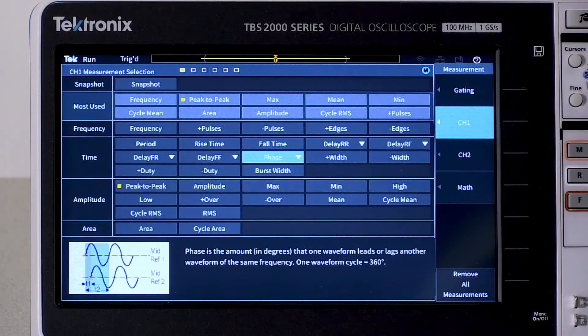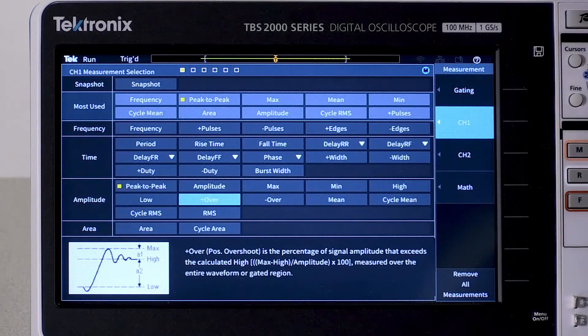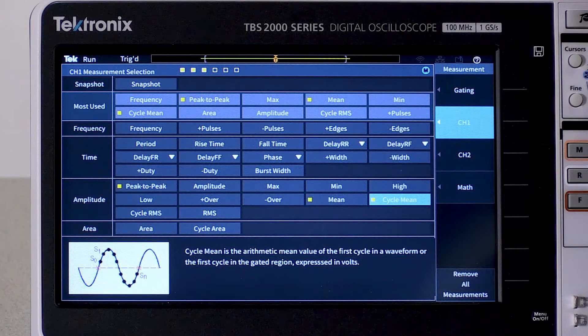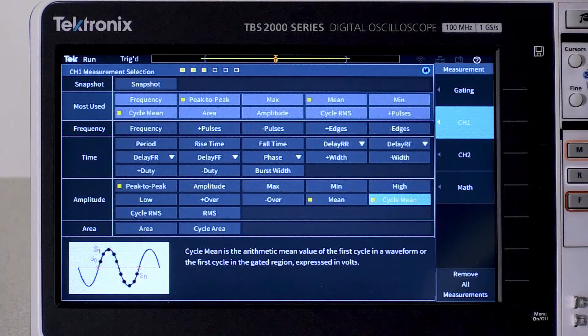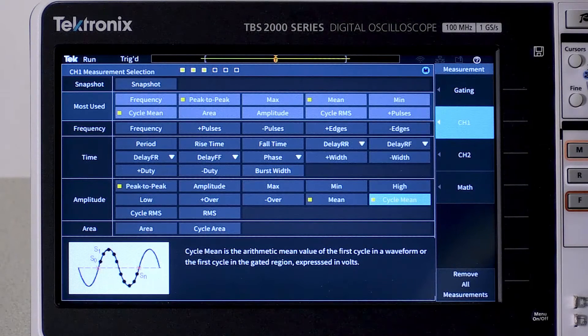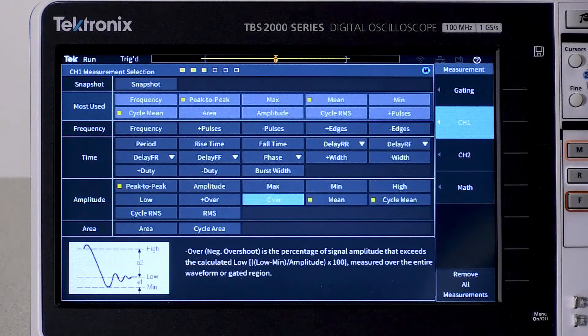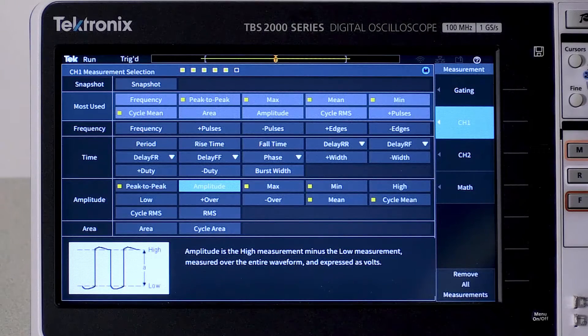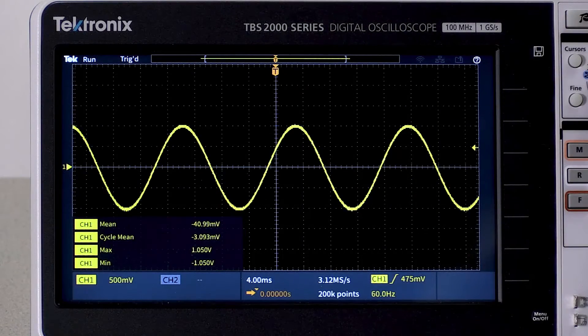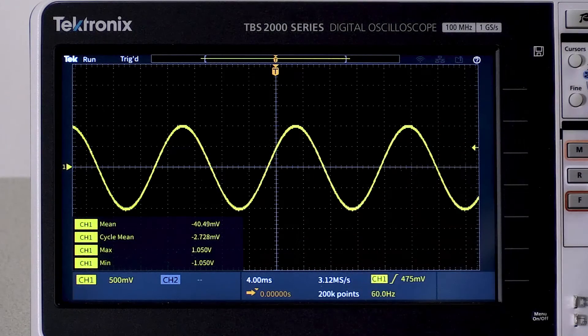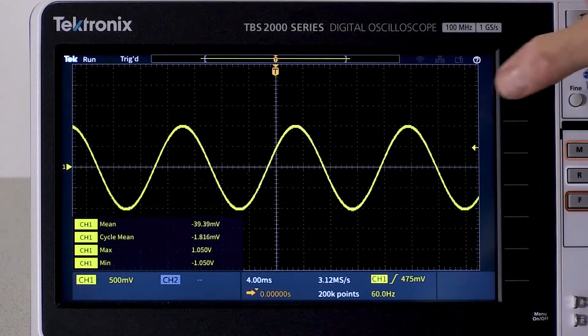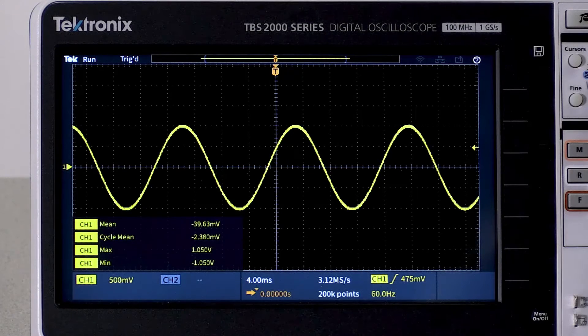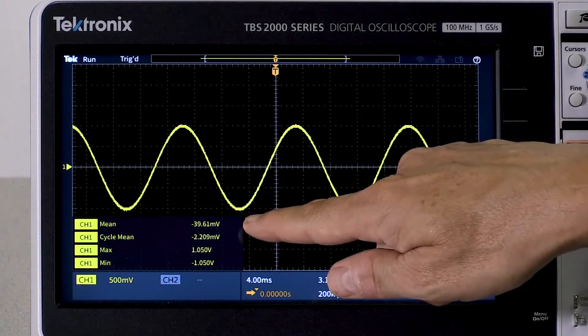Now I'll turn on the mean measurement. I'll also turn on cycle mean. Measurements that begin with the word cycle are calculated over the first full cycle in the gated part of the record. In this case, that's the screen. I'll also turn on min and max for reference, and I'll turn off peak to peak because we don't need it. The min and max are about equal but opposite, and this sine wave is vertically symmetrical around zero volts. In other words, there's no DC offset.